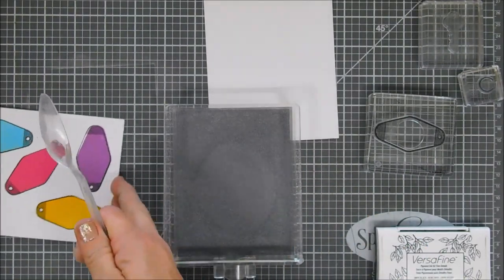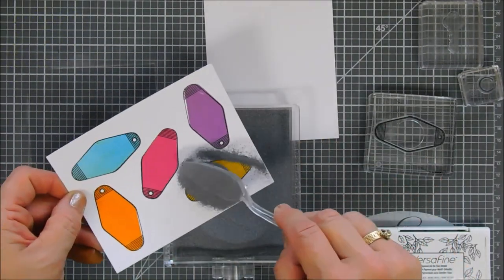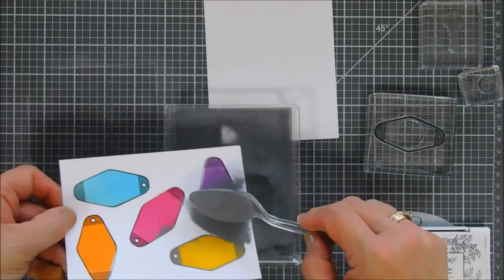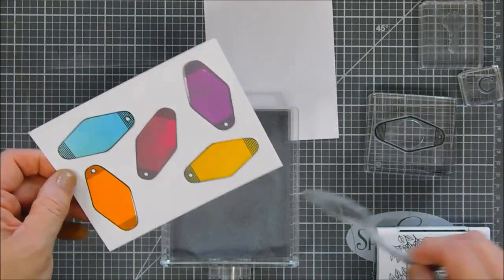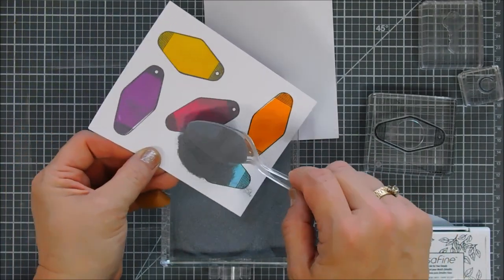When you heat emboss you can't even see the black behind it. I like using this ink for that purpose because I can see where I'm stamping versus using a watermark ink so that's why I chose this ink.